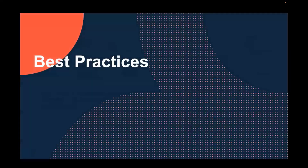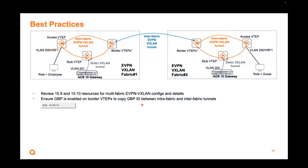For best practices, review the 10.9 and 10.10 resources for EVPN VXLAN configuration and details. For this 10.11 feature specifically, you just need to make sure that GBP is enabled globally on the border VTAP to copy the GBPID between the intra-fabric and inter-fabric tunnels.